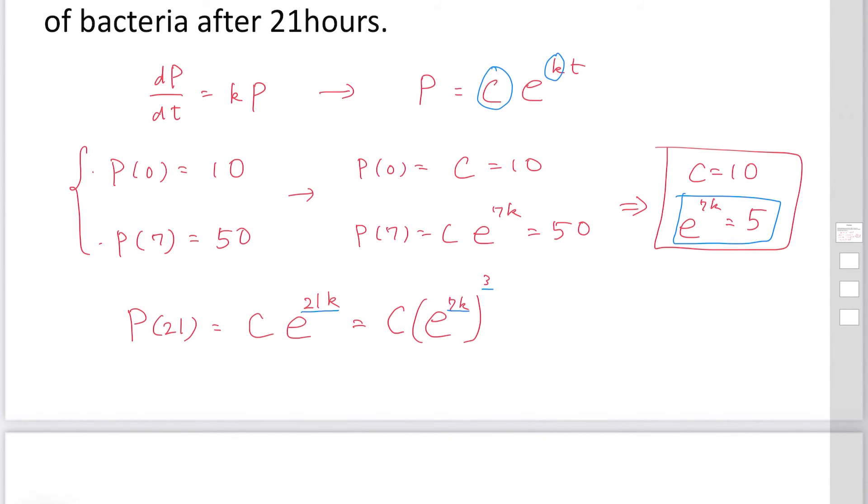Then we substitute C and exponential 7k in these equations. Then 10 times 5 to the third: 1,250.